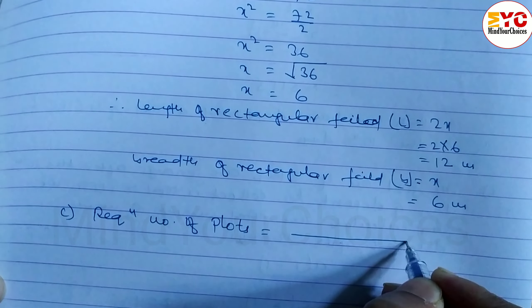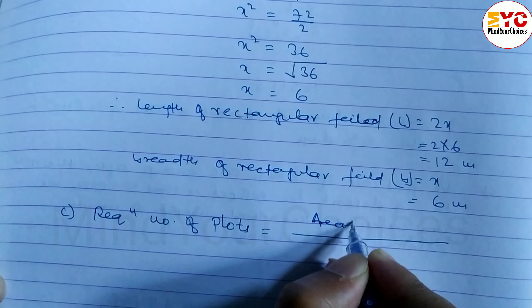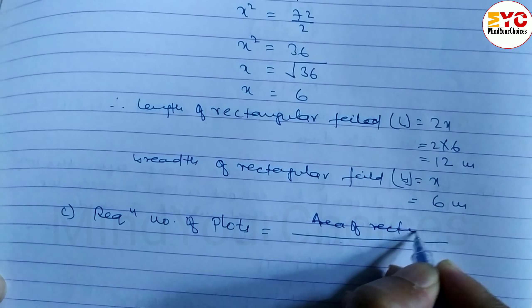Number of plots is equal to area of rectangular field divided by area of plots, so area of rectangular field divided by area of plots.